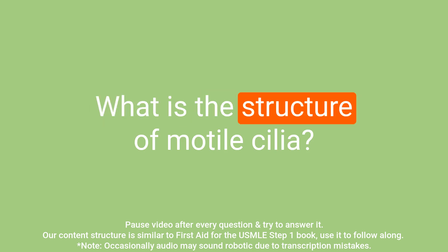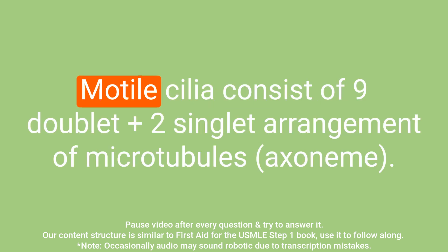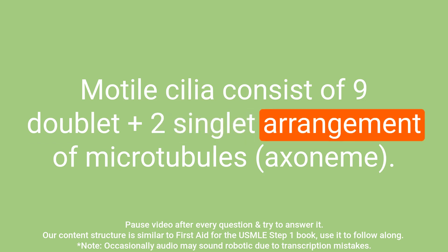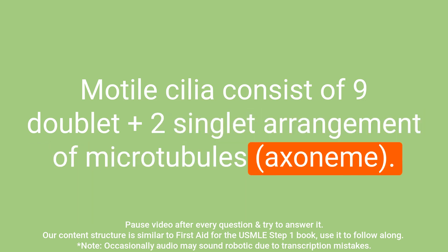Question: What is the structure of modal cilia? Answer: Modal cilia consist of a nine doublet plus two singlet arrangement of microtubules.